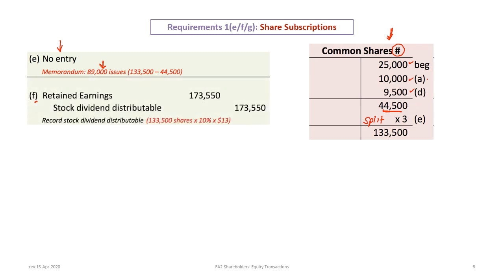In transaction F, the company declares a 10% stock dividend. Stock dividends come out of retained earnings. We debit retained earnings and credit a stock dividend distributable account — a temporary parking spot until the dividends are actually distributed. We have 133,500 shares times 10% times $13 (the average market price), so the market value of those shares is taken out of retained earnings.